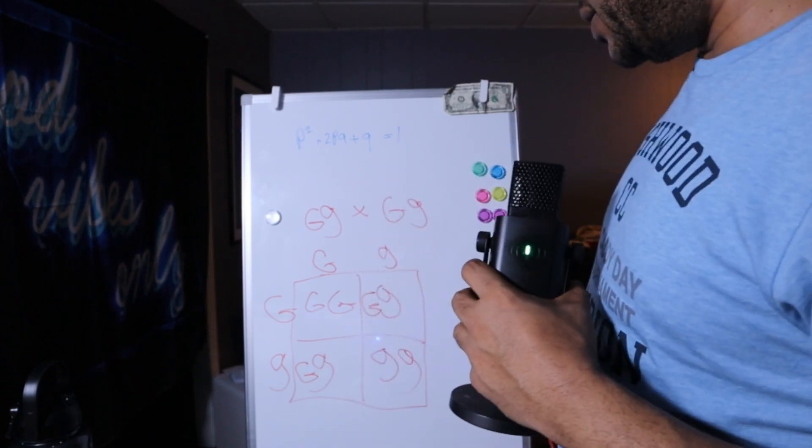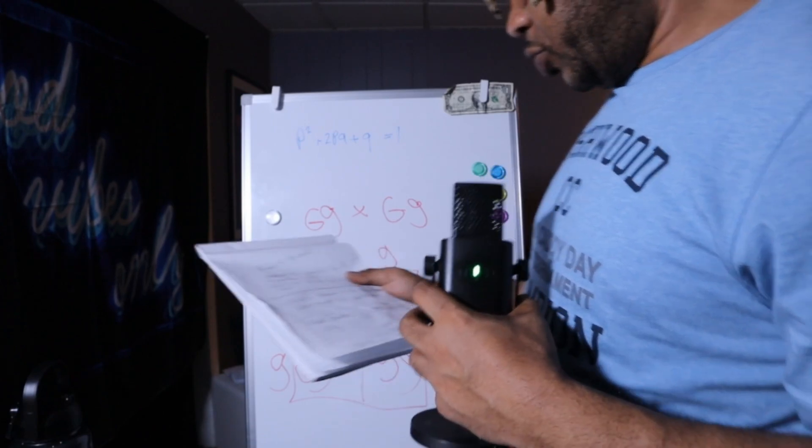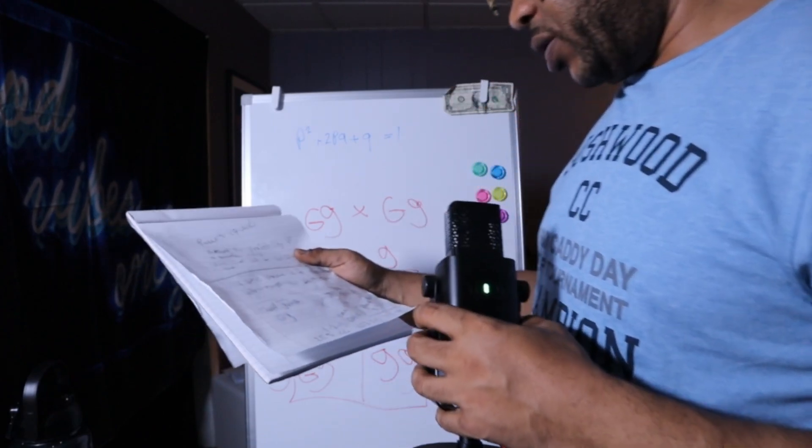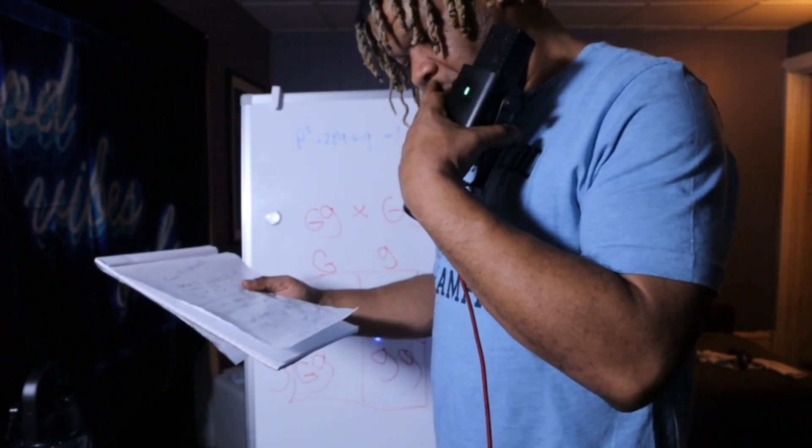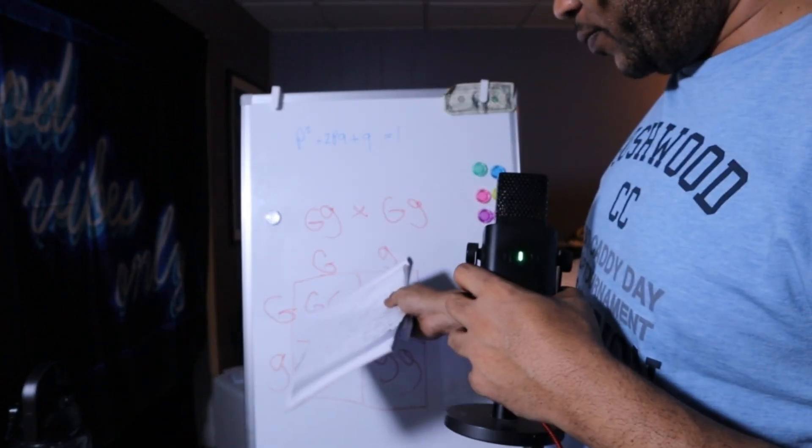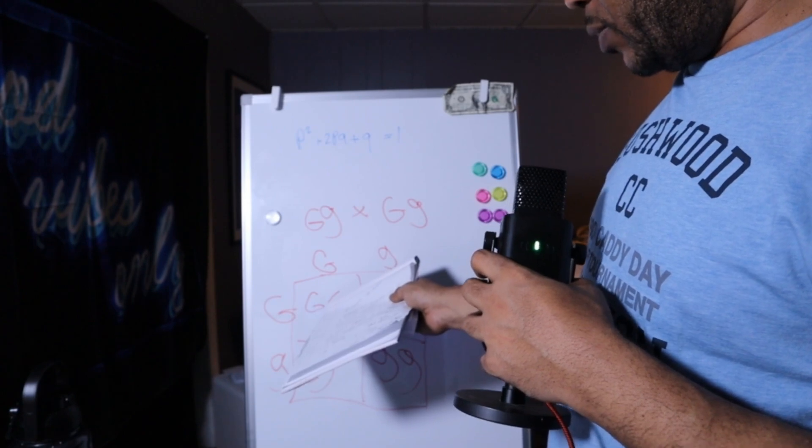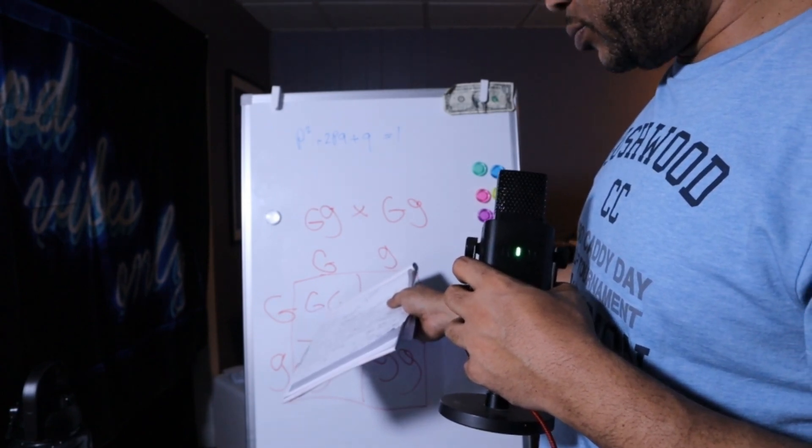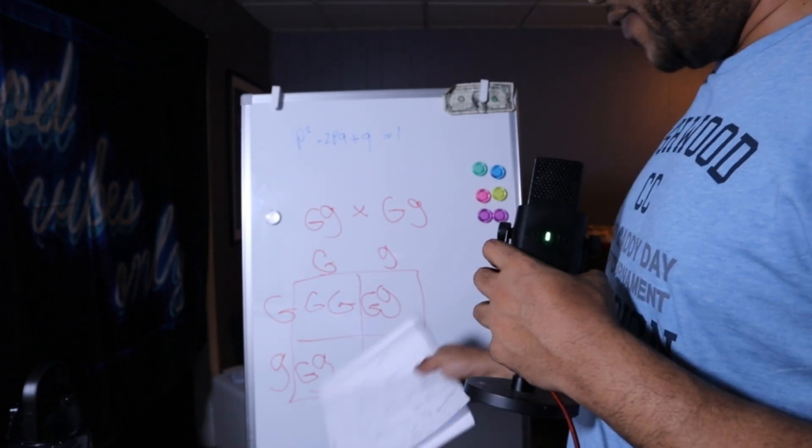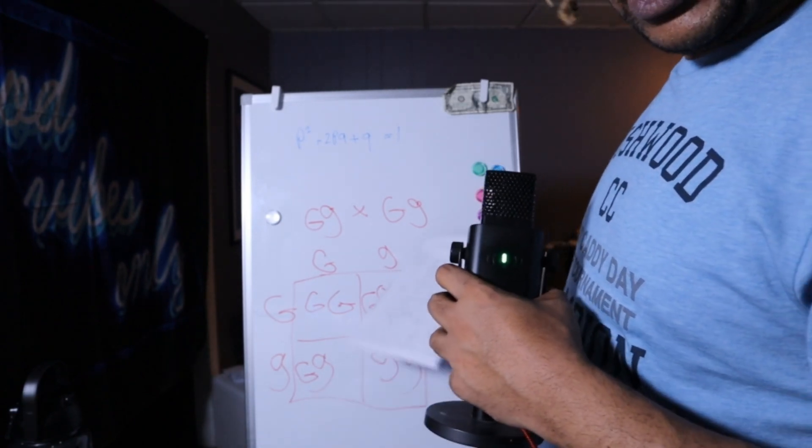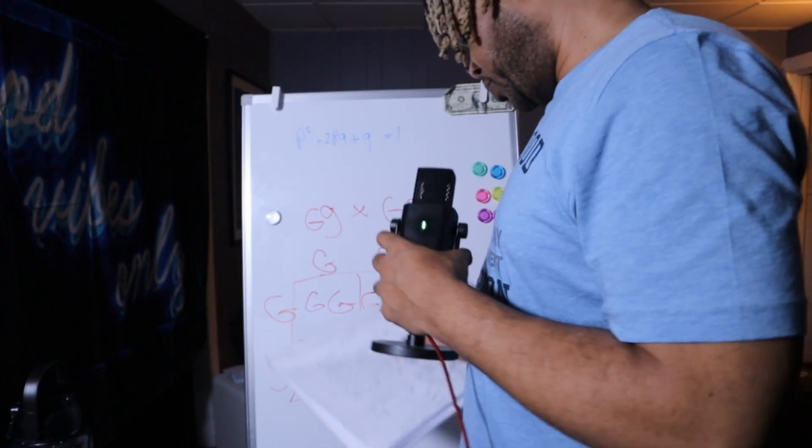One two to one. One being homozygous dominant. One being homozygous recessive. And two being heterozygous. So, that is a one two to one ratio. Genotype ratio. Which is 25% homozygous dominant. 25% homozygous recessive. And 50% heterozygous. All right.